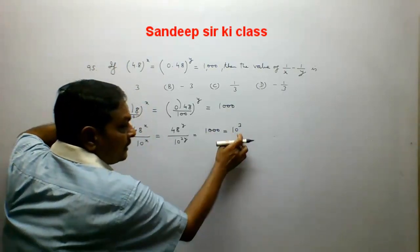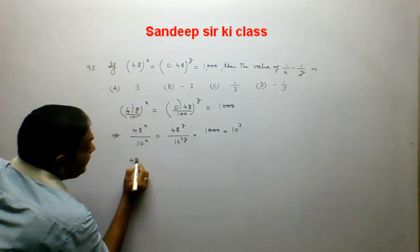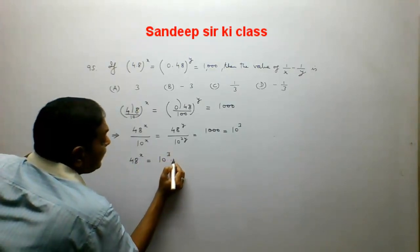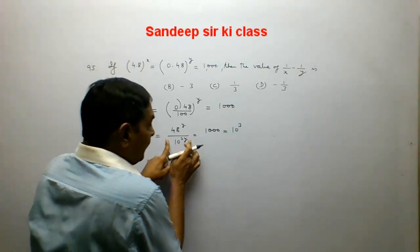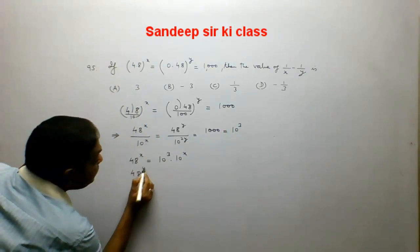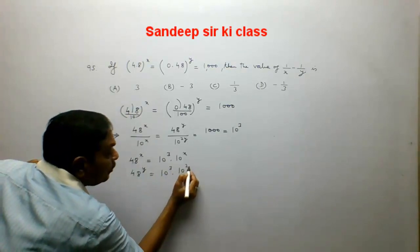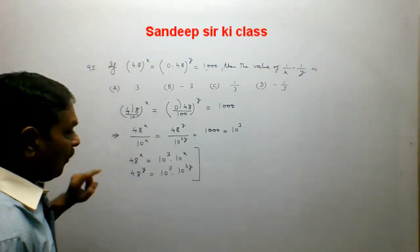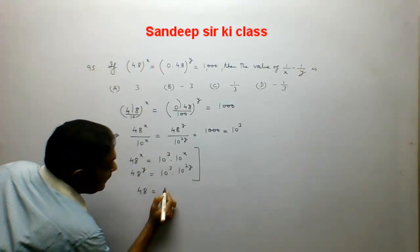Comparing the first expression with the third, we get 48 raised to the power x equals 10 to the power 3 into 10 to the power x. Comparing the middle expression with the last one, we get 48 raised to the power y equals 10 to the power 3 into 10 to the power 2y. These two results are what we have obtained.